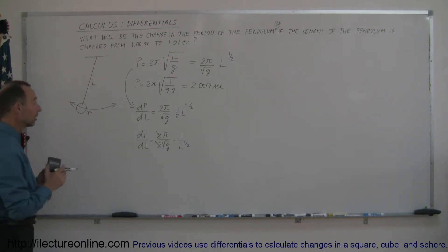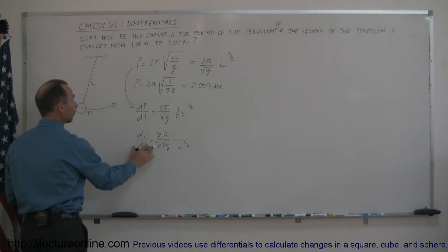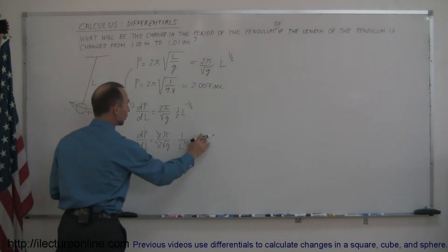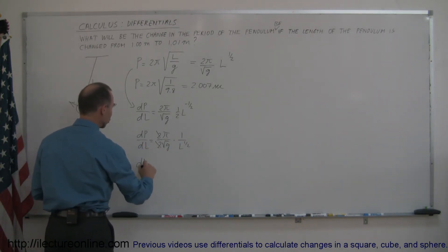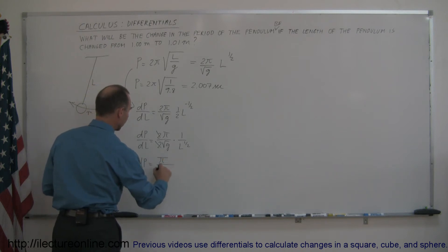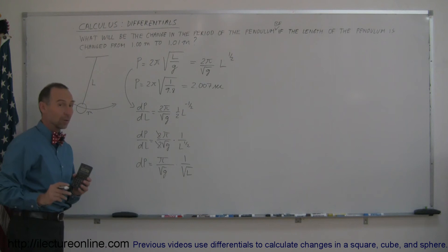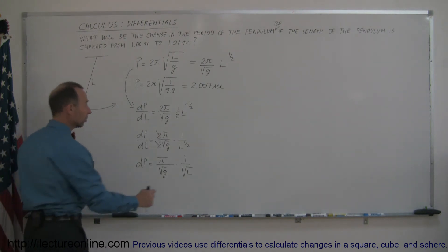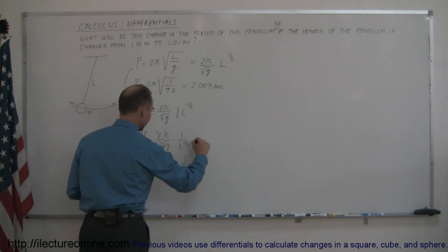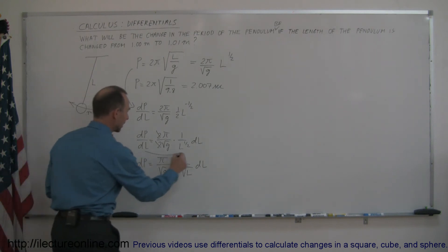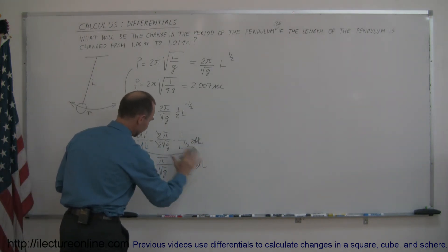Alright, so now we have an equation that describes the change in the period with respect to the change in l. If we now move the dl over to the other side, we now can say that the change in the period is equal to π divided by the square root of g times 1 over the square root of l. So all we have to do now is plug in the change in l. Oh, I'm forgetting something. I need the dl over here. There, that's better. I can't forget my other differential. So I'm moving my dl over here.